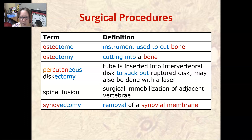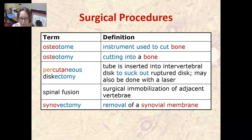An osteotome is an instrument used to cut bone. Osteotomy is cutting into a bone. Percutaneous discectomy is a procedure where a tube is inserted into the intervertebral disc to suction out a ruptured disc; it may also be done with a laser. Spinal fusion is the surgical immobilization of two adjacent vertebrae, fusing them together. Synovectomy is the removal of a synovial membrane.